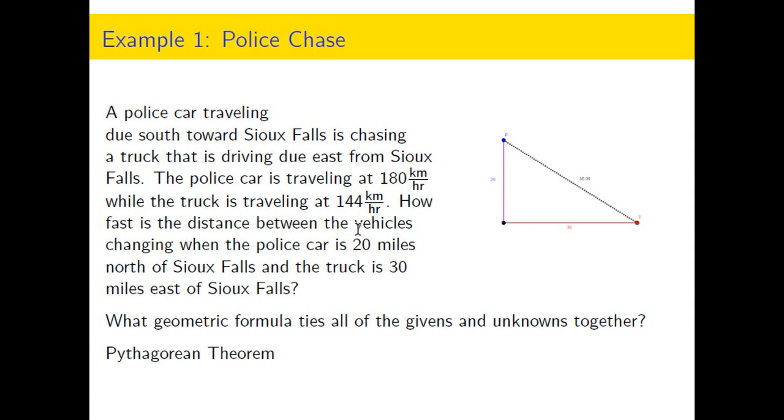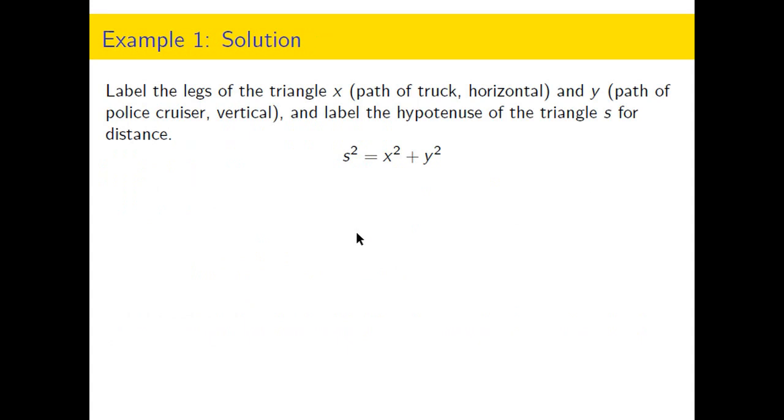So let's label the legs. And since we had the truck going in the horizontal direction, I'll call the distance it's traveled from Sioux Falls X. And the distance of the police cruiser from Sioux Falls will be Y. And that means that the distance from the police cruiser to the truck is S.